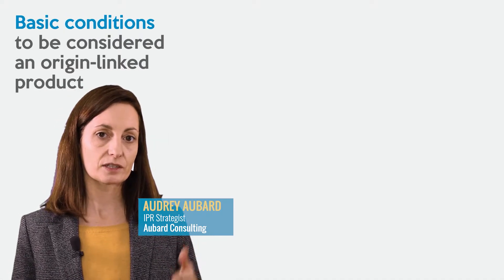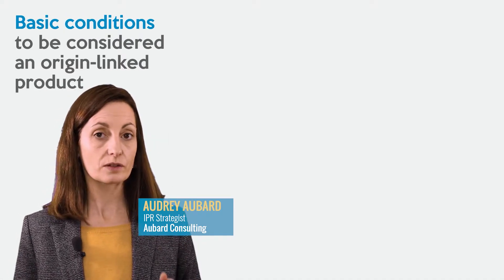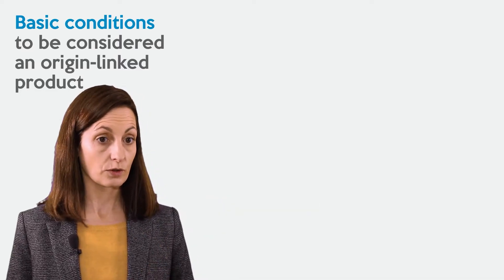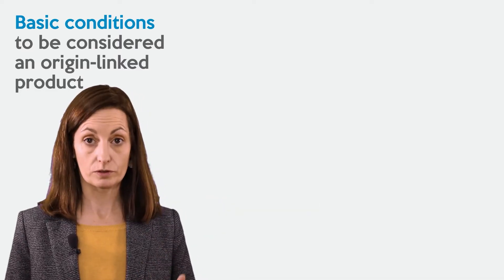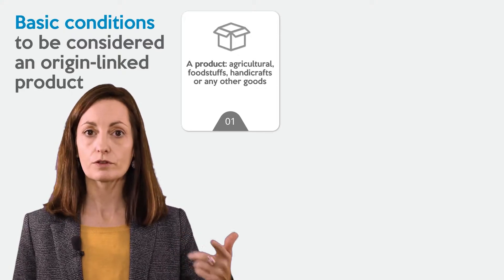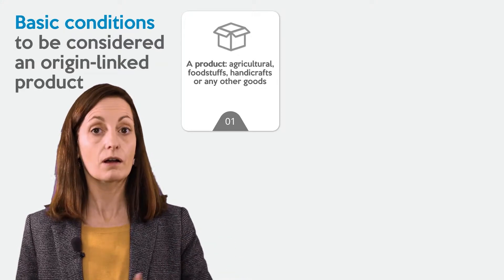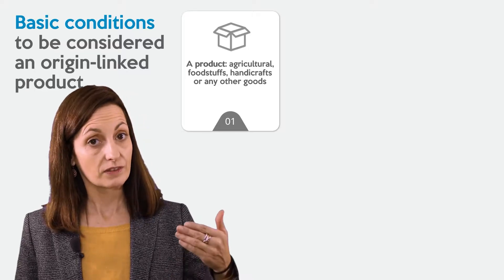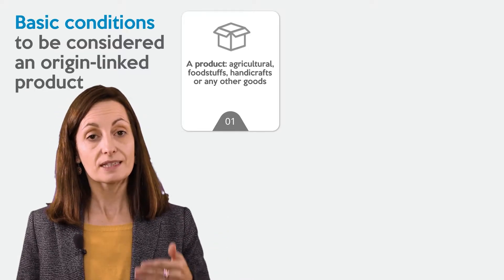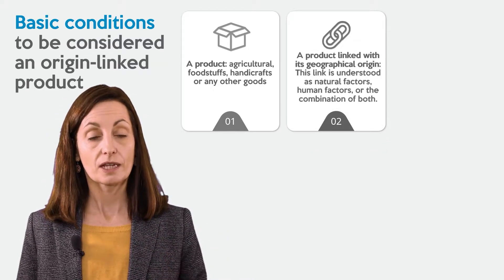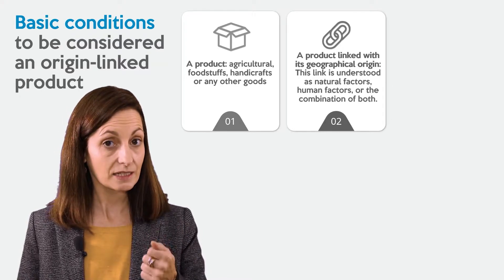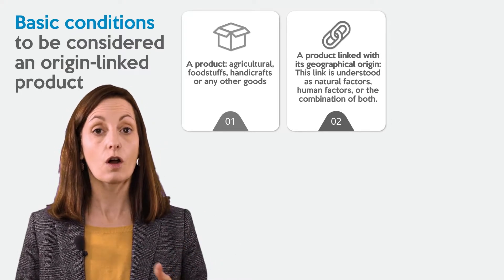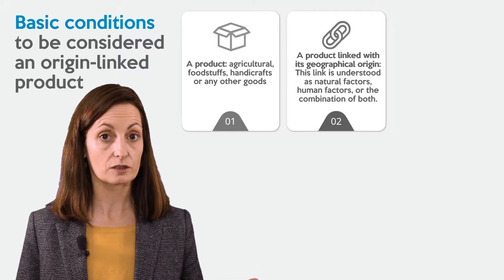What are the basic conditions to be considered as an origin-linked product? First of all, we need a product — agricultural, foodstuff, handicraft, or any other goods. We need this product to be linked with its geographical origin, and this link is understood as natural factors, human factors, or the combination of both.